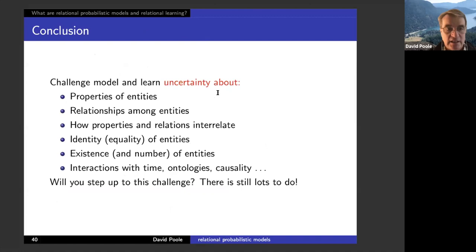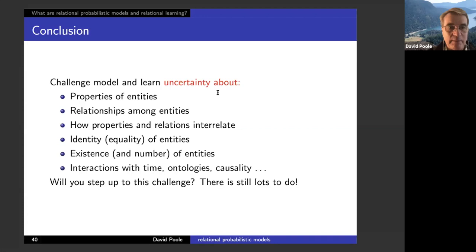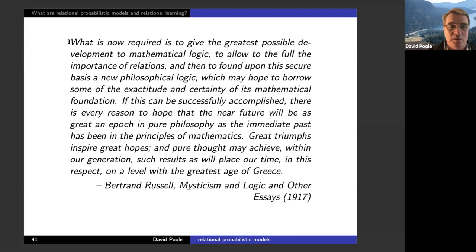In conclusion, the challenges are to model and learn uncertainty about properties of entities, relationships, how properties and relations interact, identity of entities, existence and number of entities, and all their interactions with time, ontologies, and causality. There's still lots to do here. I'll end with a quote from Bertrand Russell a hundred years ago: what's required is to allow the full importance of relations. We want to build on that importance of relations. And if you want to move beyond last century's logic into this century, you should use probabilities. Thank you.